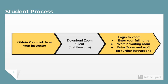The student process. First, the student will receive an email with the Zoom link from their instructor. Second, the student should download the Zoom client if it is the first time they are using Zoom. And finally, they should log into Zoom using the Zoom link, enter their full name, wait in the virtual waiting room, and then enter the Zoom room and wait for further instructions from their instructor.